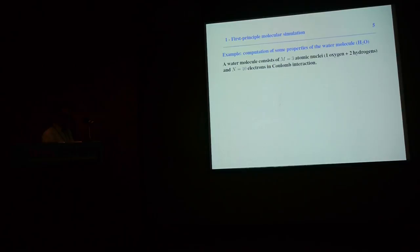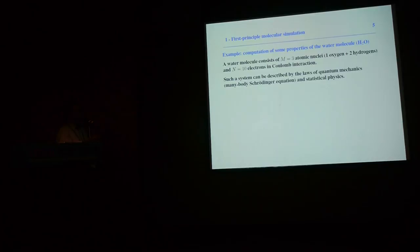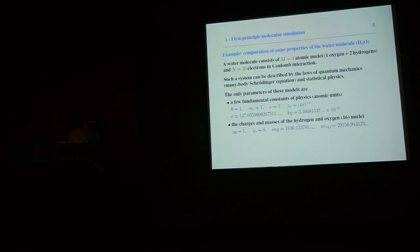We know how to write down the Coulomb interaction, and so we can use the fundamental laws of quantum mechanics and statistical physics — the first principles of these two fields — to compute, in theory, all the physical, chemical, or mechanical properties of this system. A really nice feature of these models is that they do not depend on any empirical parameters specific to the system.